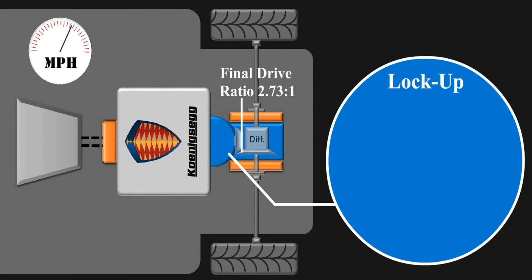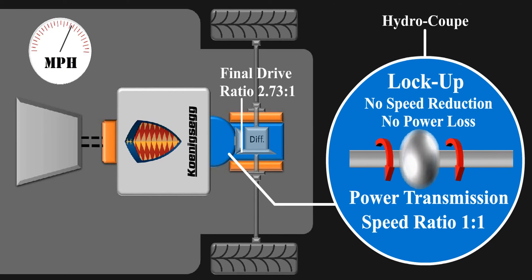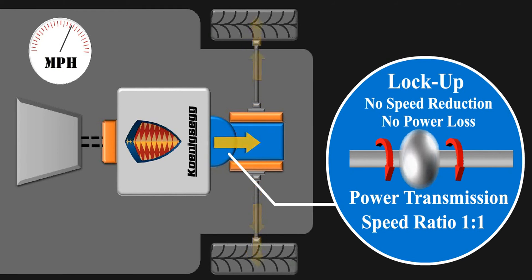At higher speeds, the input rpm required here is sufficiently higher, which the engine can give without any reduction. So the hydrocoupe locks up. And this transmit power like a single shaft with no reduction and power losses. After this the power from electric motor and engine simultaneously drive the vehicle.